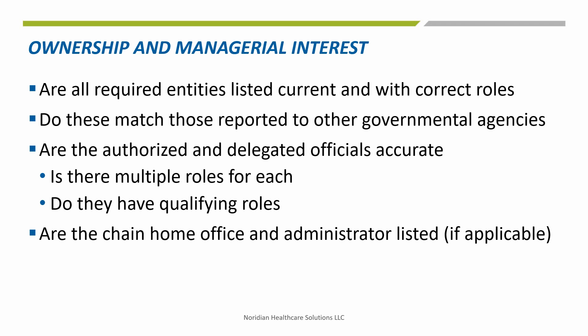When reviewing the ownership and managerial sections, verify all entities listed have the correct roles — multiple roles can be chosen for each one. For individuals, choose all that apply. Board members are to be listed as directors. Officers are those with roles such as CEO, CFO, COO, Board President or Chairman, or Vice Board President or Chairman. CEO, CFO, and COO typically have additional roles for managerial functions they perform. If adding new entities and individuals, watch that dates for Social Security or Tax IDs are accurate, as it is easy to transpose a number or enter today's date instead of a birth date or role date. If there is a chain home office and administrator, they need to be listed in these sections and in the chain home office section.